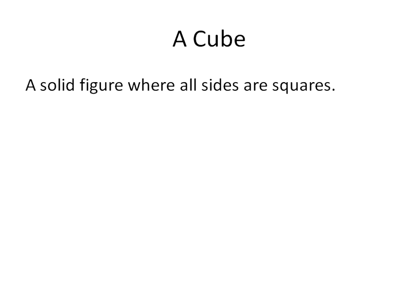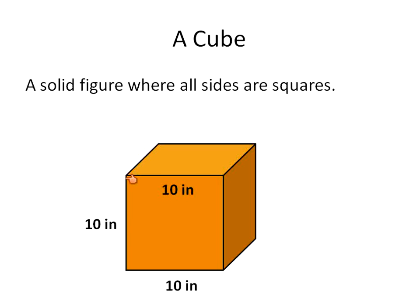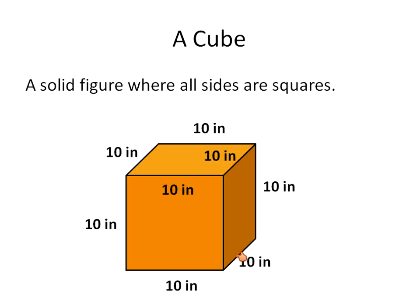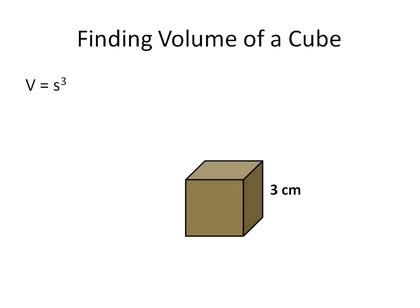With a cube, it's really nice. A cube is a solid figure where all the sides are squares. For example, this side is a square where all edges are 10 inches, and every other side is also a square with all edges 10 inches. When we find the area of the bottom, that's side times side, and then we multiply that times the height — we're actually multiplying the same number times itself three times. So the volume of a cube is the side cubed, or to the power of three.